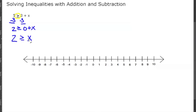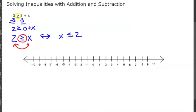This is the same thing as x is less than or equal to 2. You can rewrite it with x on the left side if that's easier, but if you're switching left and right sides you also have to switch the direction of the inequality. So graphing x is less than or equal to 2: find 2 on the number line, circle it, and fill it in because x can equal 2. Then shade everything to the left because x is anything less than or equal to 2.